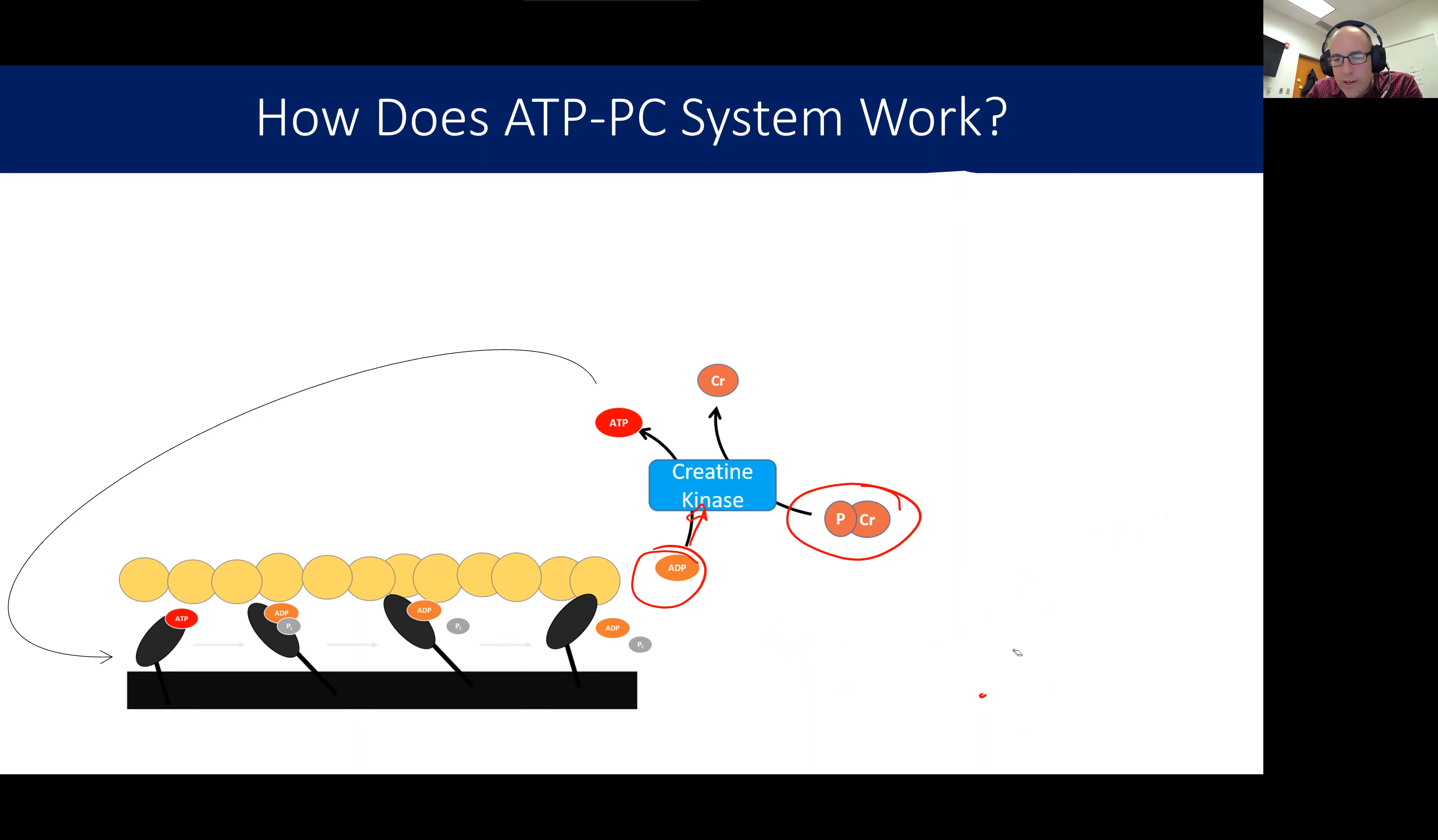All right. So this molecule phosphocreatine has this phosphate onto it, and we're just going to transfer it over to the ADP to now get ATP.